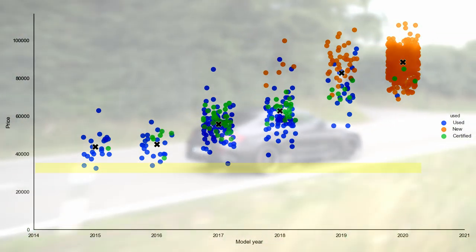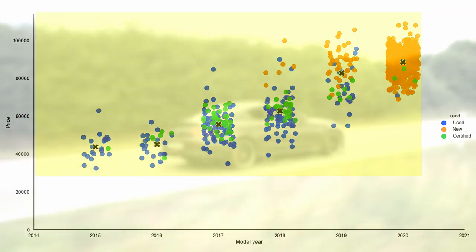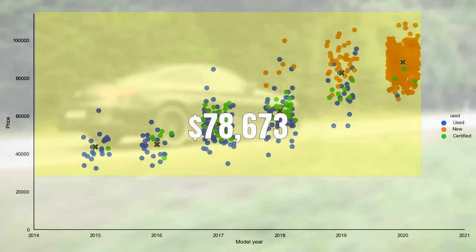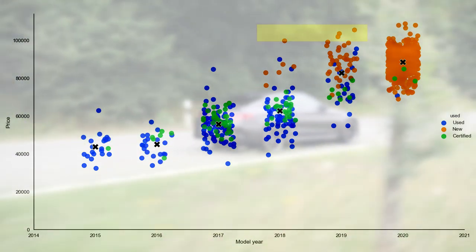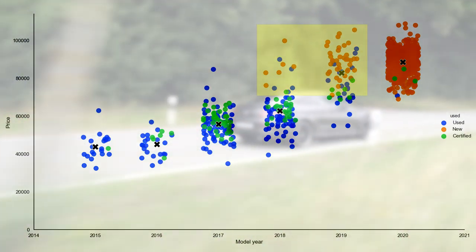Prices start at $32,500, they go up to $108,990 but the average price is $78,673. What I think is interesting in this graph is that you can see there are still quite some unsold stock from 2019 and 2018.